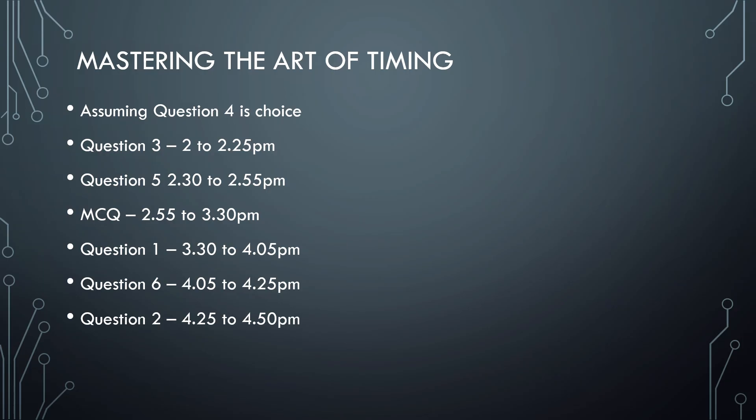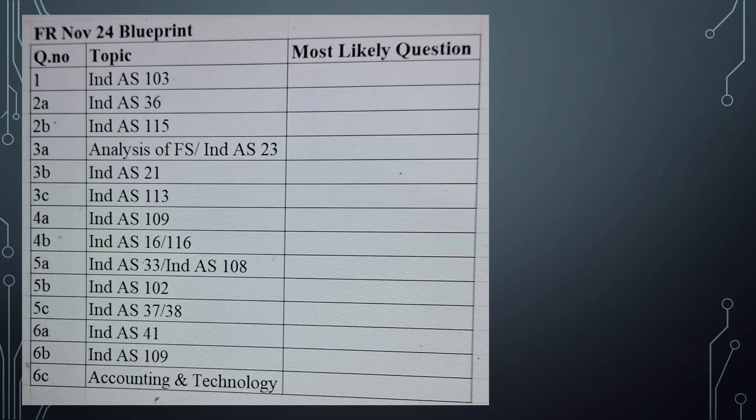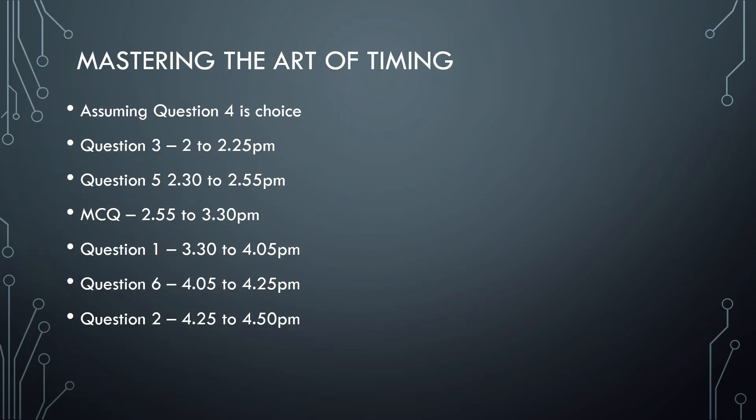Then you should go straight to Question 1 - 3:30 to 4:05 pm. It might extend up to 4:10 but ensure it doesn't go beyond because every second is very important after 4 pm. And Question 6 is 4:05 to 4:25 pm because it will be having some theory or either professional ethics and accounting and technology, so you should be able to rush up and also your writing flow will be there.